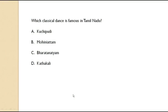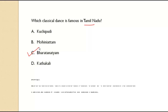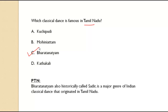Which classical dance form is famous in Tamil Nadu? It is Bharatanatyam. Bharatanatyam, also historically called Sadir, is a major genre of Indian classical dance that originated in Tamil Nadu. So if you see 'Sadir' as an option, that answer is also correct.